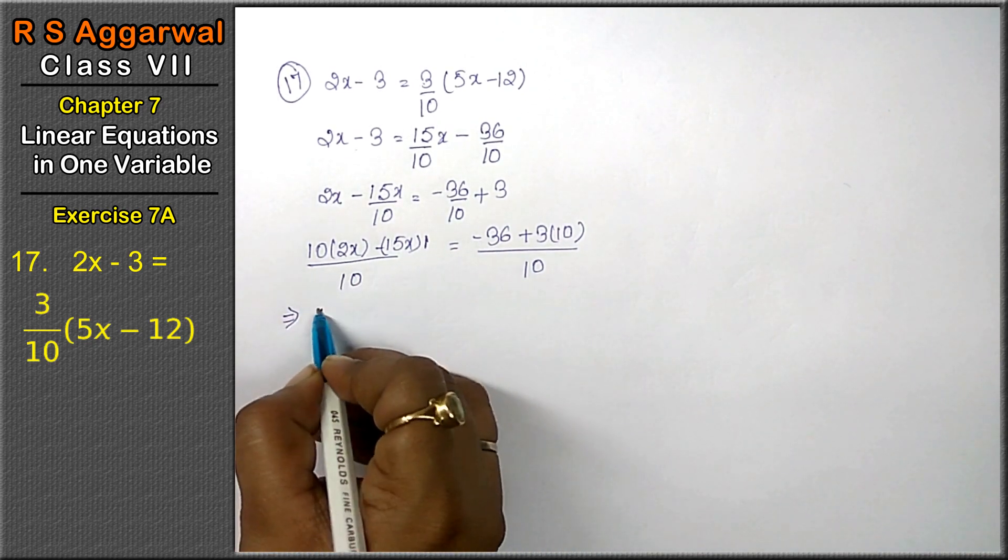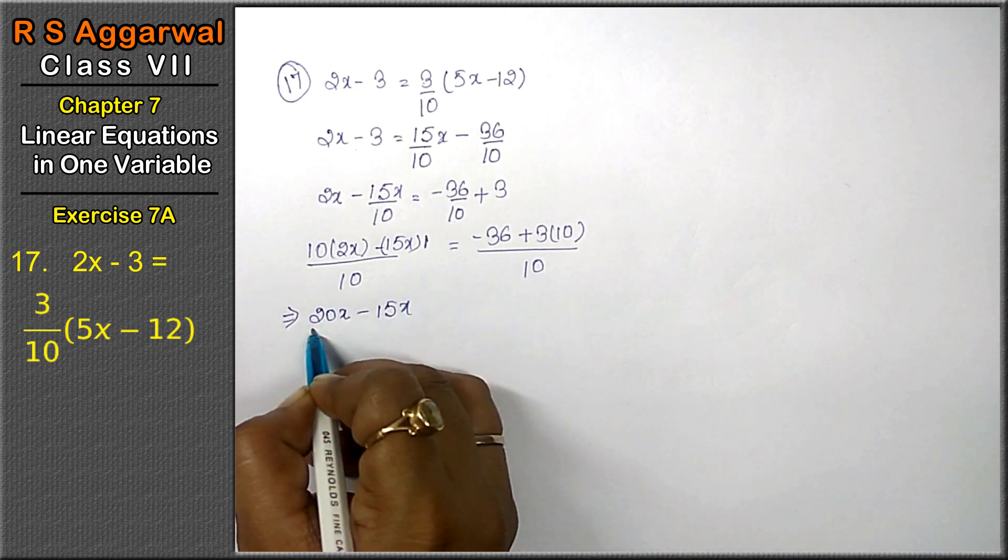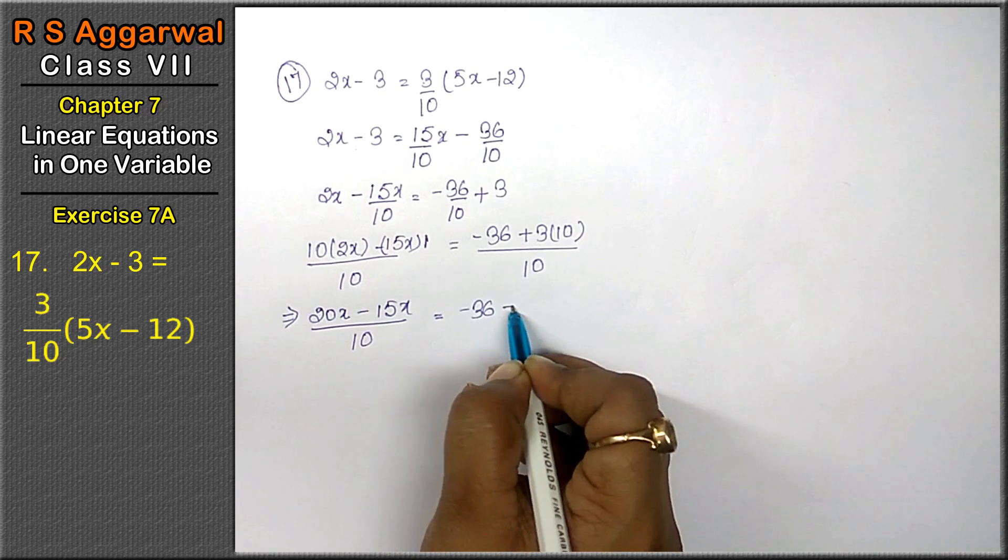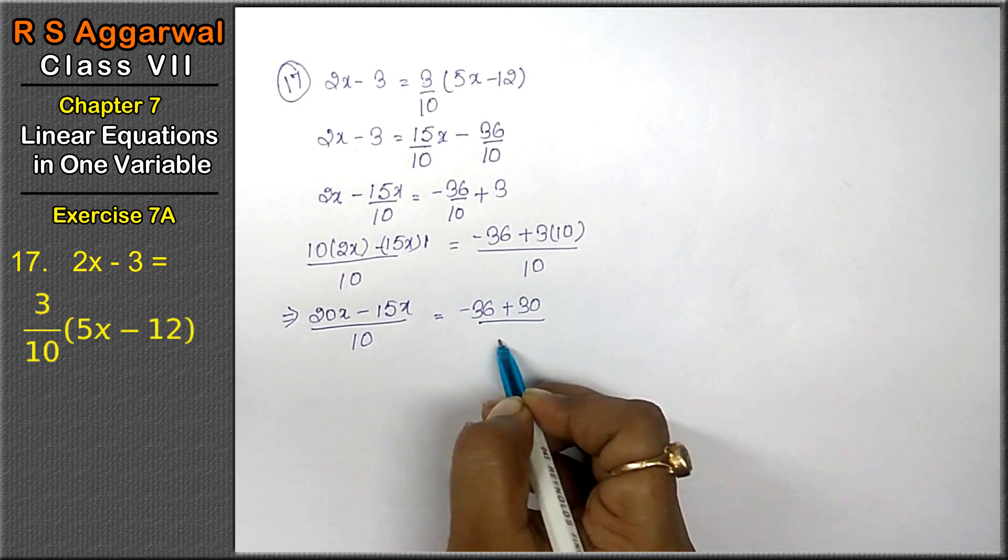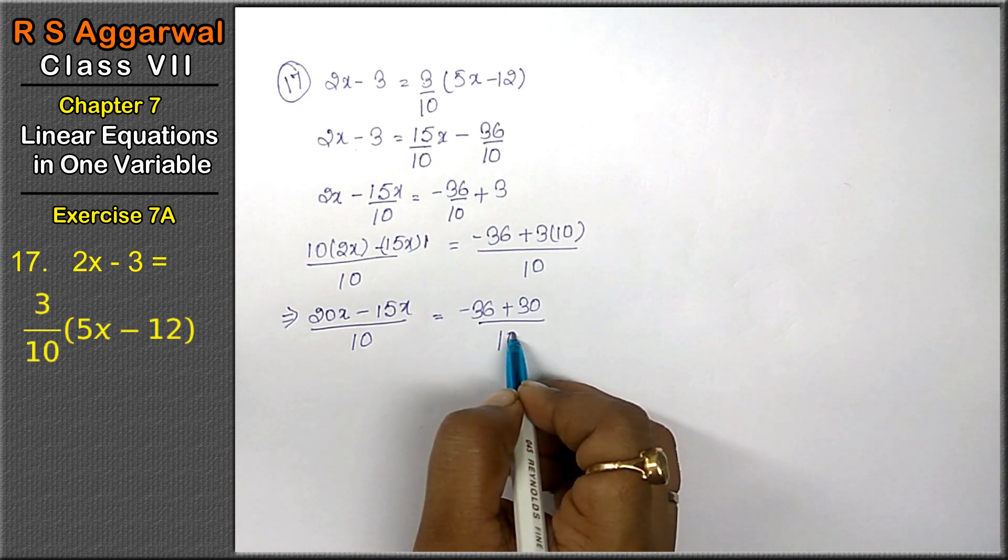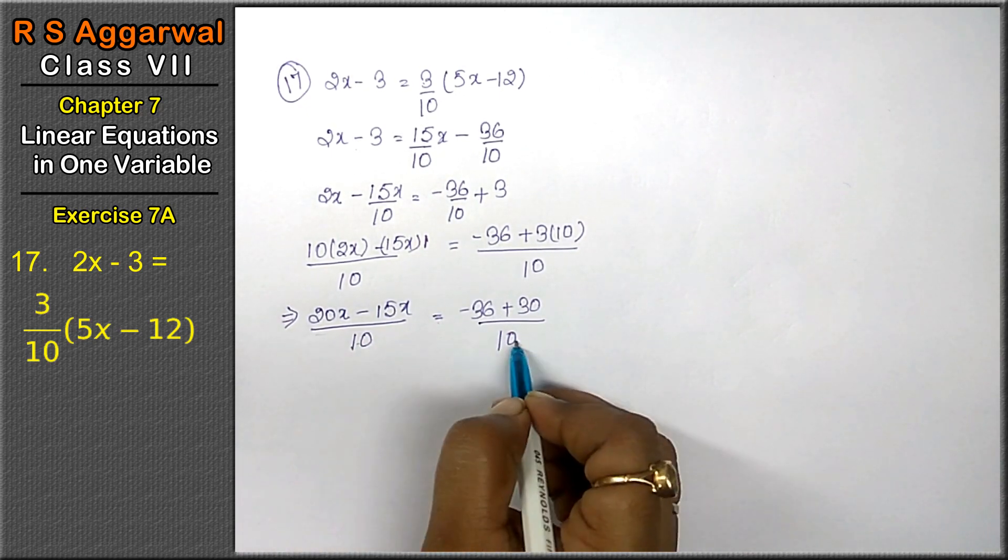Now, 10, 2 is 20x minus 15x upon 10 equals to minus 36 plus 30 upon 10. Friends, when the denominator is equal, in LCM upon, same values, they can be deducted.